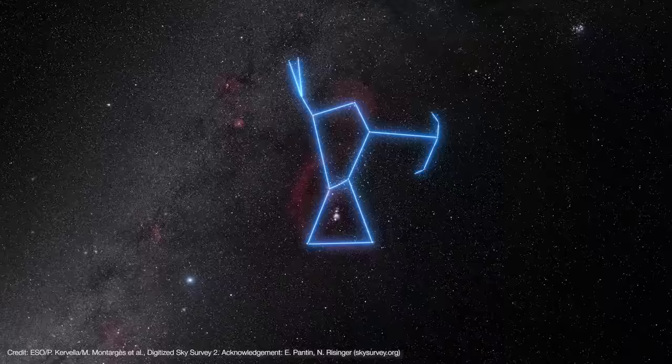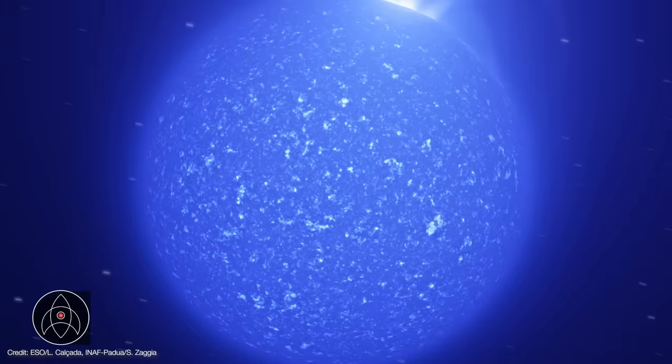Let's start with a little bit of background. Betelgeuse is a red supergiant star in the northeast shoulder of Orion. It probably started off life as a very hot 19 or 20 solar mass star.